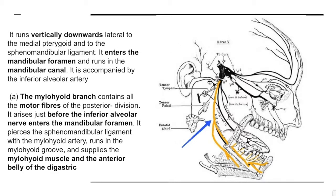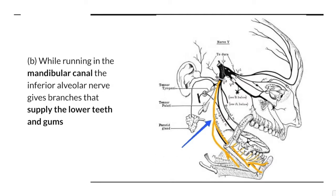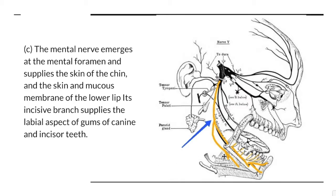While running in the mandibular canal, the inferior alveolar nerve gives branches to supply the lower teeth and the gums. After that, it emerges from the mental foramen as the mental nerve and supplies the skin of the chin, the skin and mucous membrane of the lower lip. Its incisive branch supplies the labial aspects of the gums of the canine and the incisor teeth.